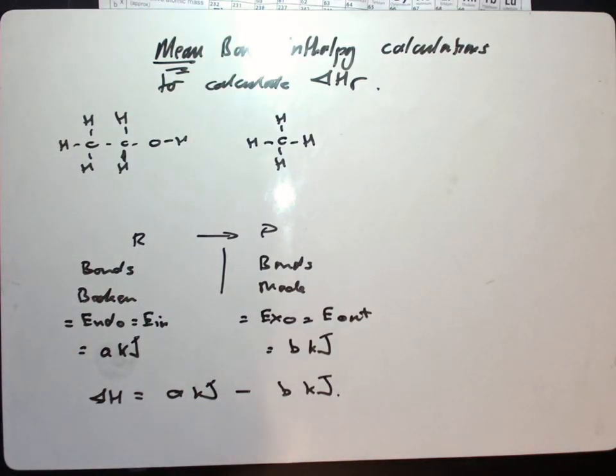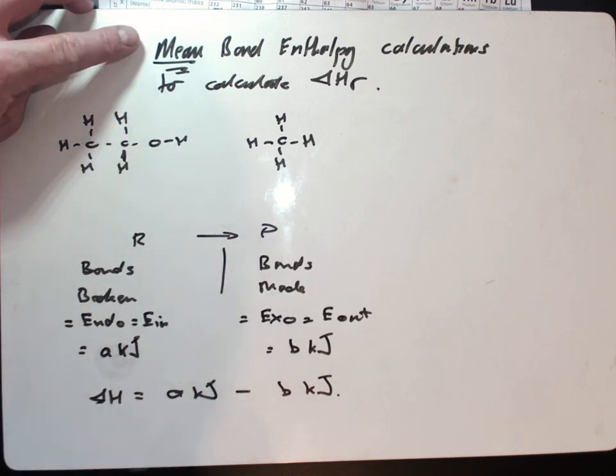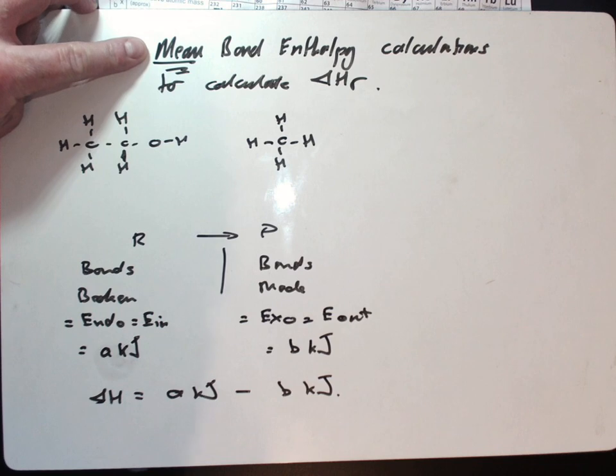Okay, so we have a video looking at mean bond enthalpies, calculation for A-level chemistry. I'm going to run through a few fundamentals here to begin with, and then we'll get stuck into a few calculations. This is a theoretical way to work out the enthalpy change of a reaction using mean bond enthalpy calculations, meaning the average bond enthalpy.